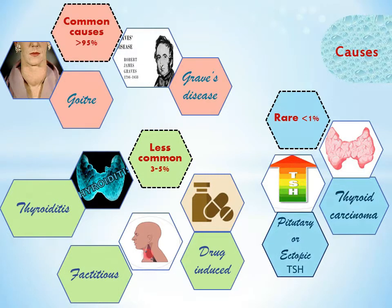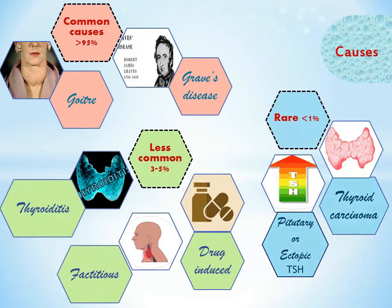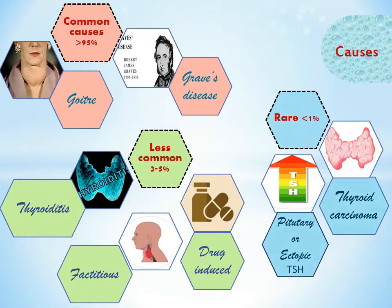Common causes of hyperthyroidism are Graves disease and toxic nodular goiter, which has two presentations: either as a multinodular or a solitary nodule. Less common causes are thyroiditis, drug-induced, and factitious or self-induced. Rare causes are pituitary or ectopic TSH and thyroid carcinoma.